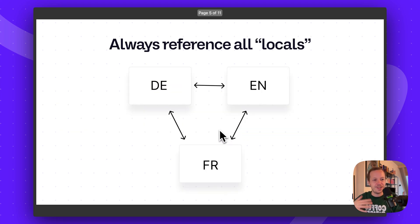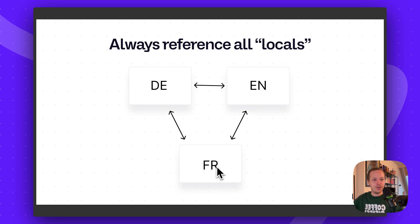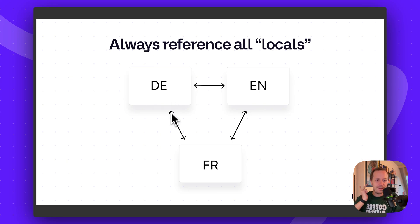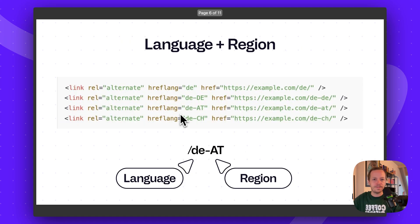Let's imagine we also have a French version. That means we need to have the German hreflang tag, the English hreflang tag, the French hreflang tag, and the default hreflang tag. All locales must be included.